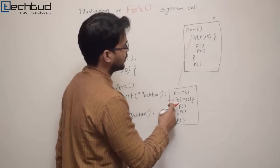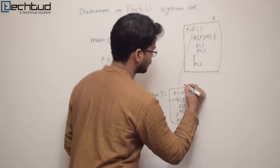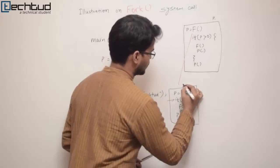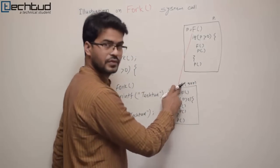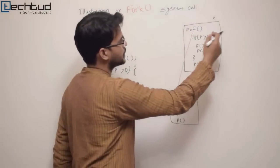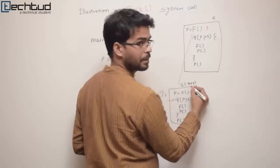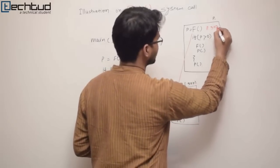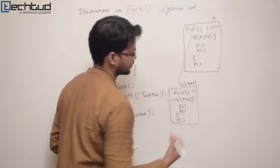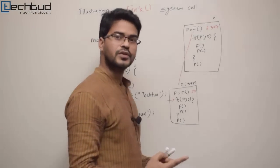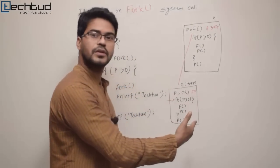As we discussed, fork returns the process ID of the child to the parent. So if this child is C1 with process ID 347, for this fork call what will be returned to the parent is that process ID — 347. But for the child, what will be returned is zero. That's what we have learned: fork returns the child's process ID to the parent, but returns zero to the child process.